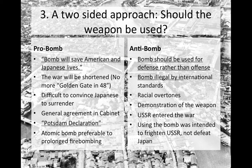Two anti-bomb approaches: first, the bomb should be used for defensive purposes rather than offensive purposes — a position advocated notably by some of the bomb's leading developers. Since U.S. territory wasn't at risk of invasion and the war in Europe was over, the weapon shouldn't be used offensively to win the war, but rather reserved for defense. Second, the bomb was illegal by international standards — the League of Nations had stated several decades earlier that should an atomic weapon be developed, it shouldn't be used, and that the world should agree such weapons are inhumane and have no place in modern warfare.